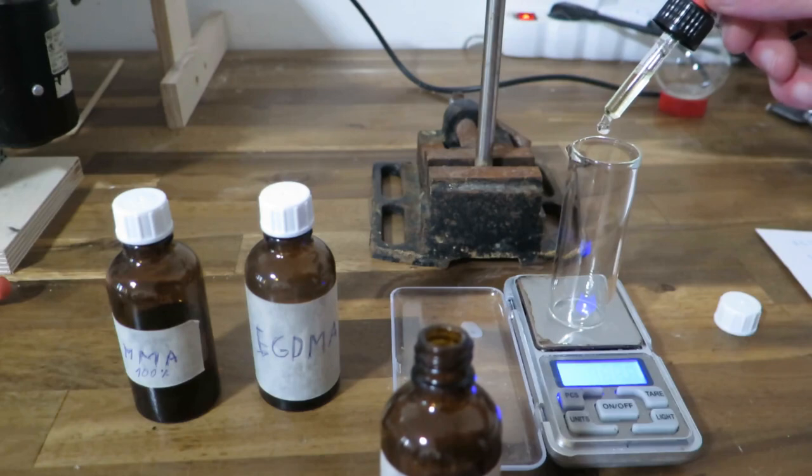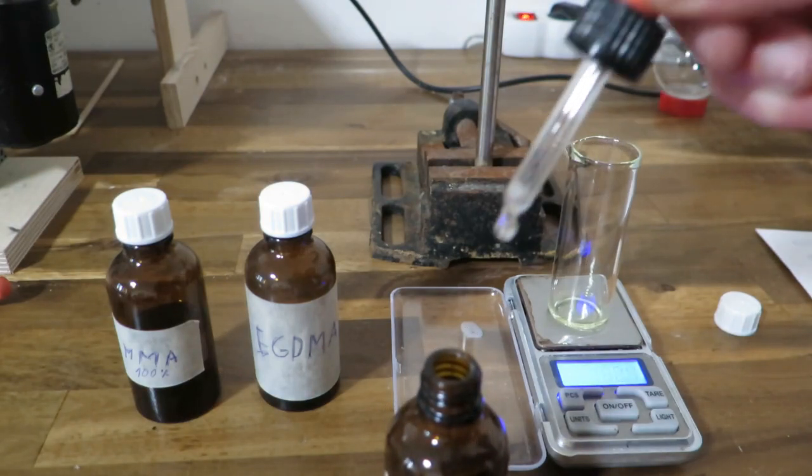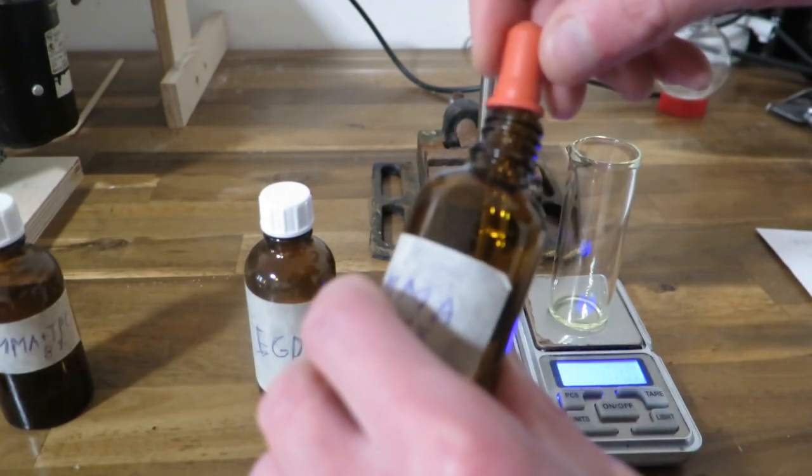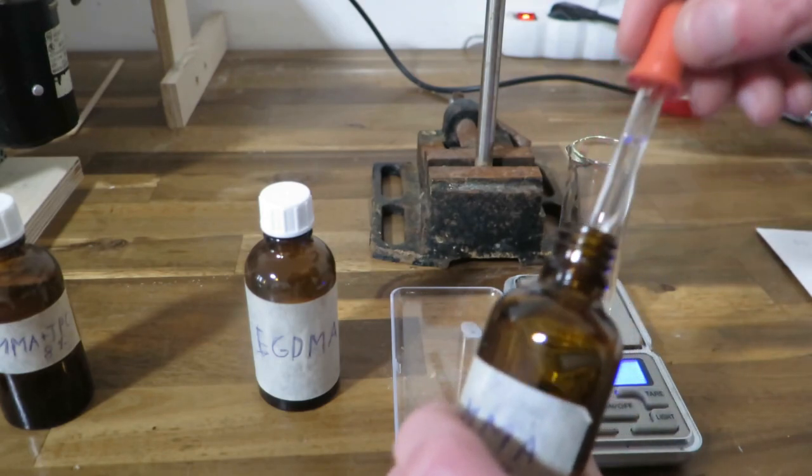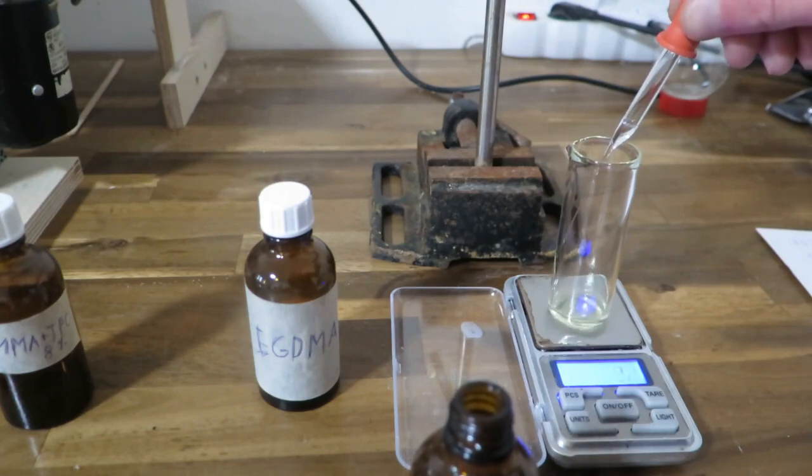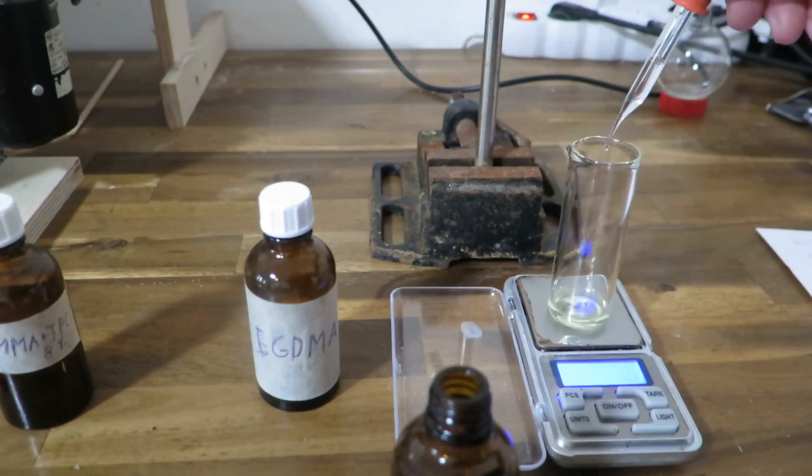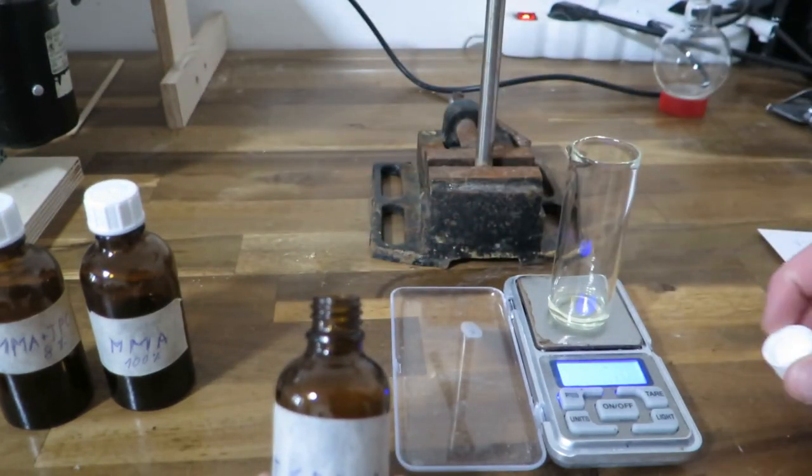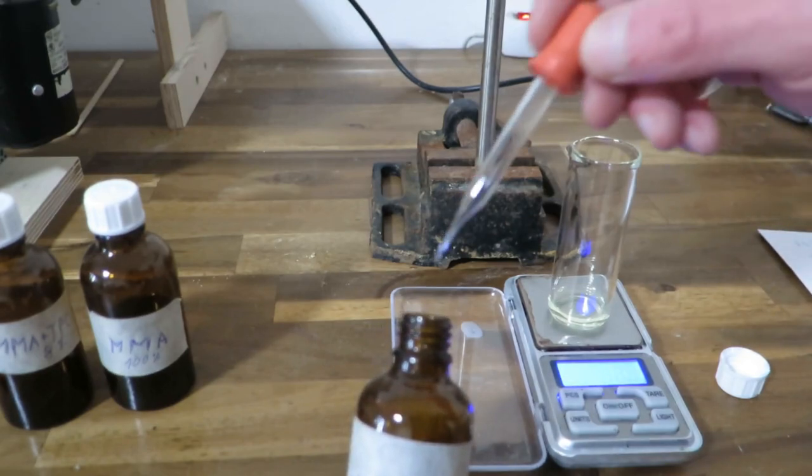I've got 8% solution and I need about half gram of it. Then you need 1.5 grams of methyl methacrylate pure, that should add up to about 2 grams. And finally I will use half gram of this ethylene glycol dimethacrylate.